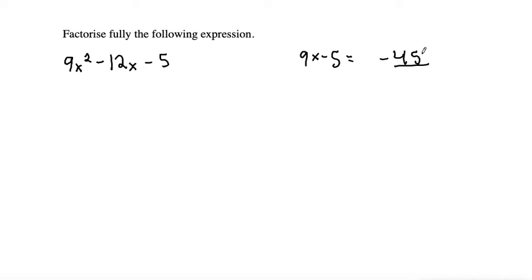From here, we're looking for two numbers that both multiply to get negative 45 and add to get negative 12. In order to find numbers such as that, I like to start by finding factors of 45. Let's start with 1 and 45.